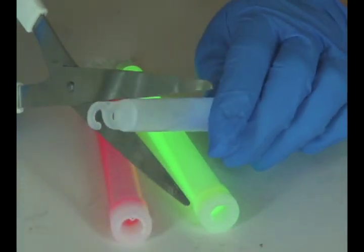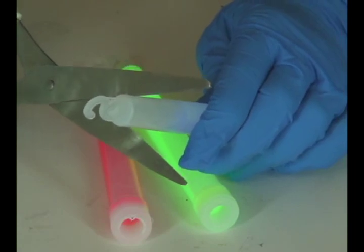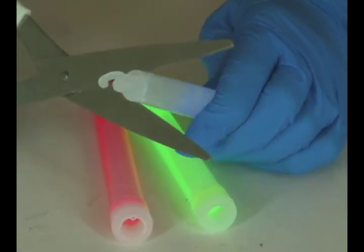Using a pair of scissors, you want to carefully cut one end off of your light stick. Make sure you do this over a sink.